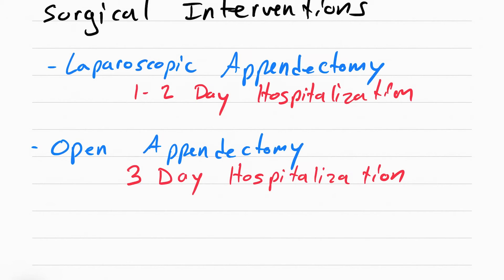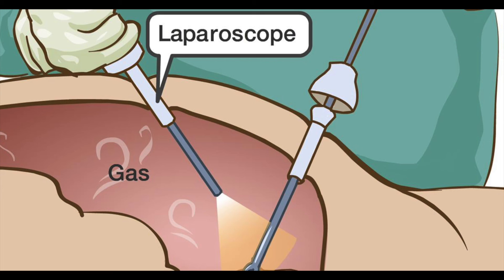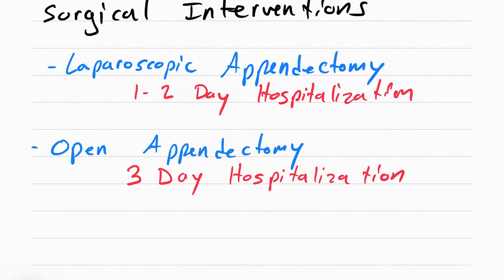One important side effect to note after laparoscopic procedures is right shoulder tip pain. This happens because the abdomen is inflated with CO2, and CO2 rises and causes irritation on the phrenic nerve, causing referred pain in the right shoulder. Referred pain means pain felt in one part of the body that is actually caused by injury or irritation in another part of the body.